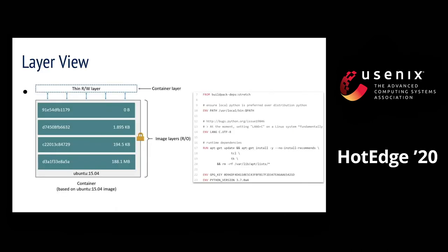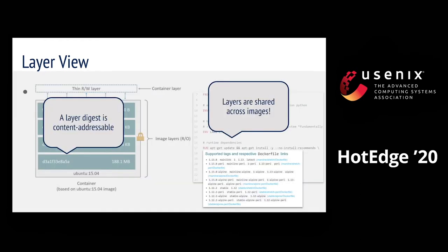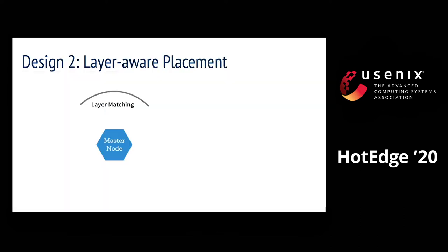If we look into the container image, each image consists of layers. Each layer is essentially a set of dependencies that developers group together, and each layer has a hash digest generated from the layer's content. We found from our analysis that layer sharing is common across images because of the reuse of popular dependencies, and that an image typically has many versions which share common layers.